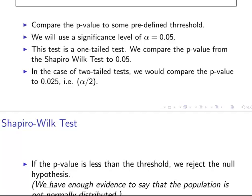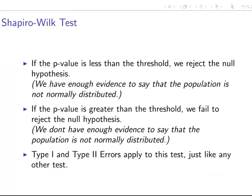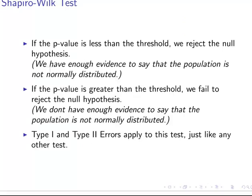What we're going to do is work with a p-value, or significance value as it's called in SPSS, and compare it to some predefined threshold. I'm going to use a significance level of alpha equals 0.05 — that's just the default in undergraduate statistics. The Shapiro-Wilk test is a one-tail test, so we compare our p-values to 0.05. For a two-tail test, we would divide alpha by two and compare to 0.025.